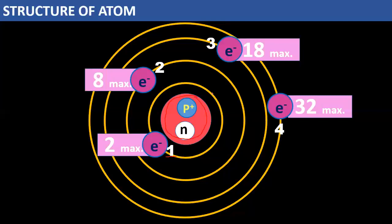Then we have the second energy level. The maximum number of electrons in the second energy level is eight. For the third energy level, the maximum is 18. And for the fourth energy level, the maximum is 32 electrons.